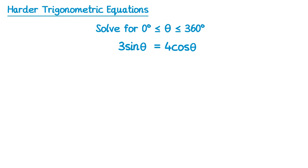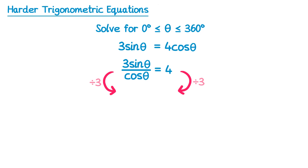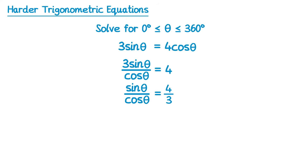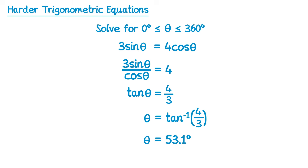Sometimes we need to use identities to help solve equations. For this equation, I'll start by dividing both sides by cos theta. On the left that gives 3 sin theta divided by cos theta, and on the right the cos thetas cancel, leaving 4. Then dividing both sides by 3 gives sin theta over cos theta equals 4 over 3. Since sin theta over cos theta equals tan theta — an identity from the identities video — we replace it with tan theta. Doing inverse tan of 4 over 3 gives 53.1 degrees, and adding 180 gives 233.1 degrees.